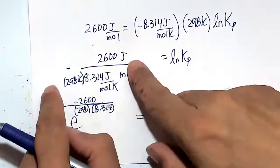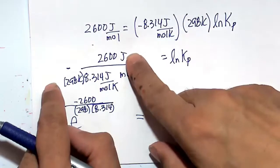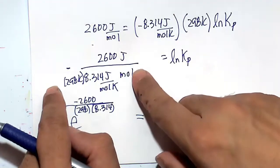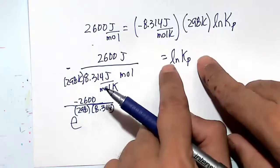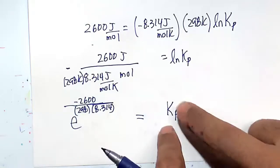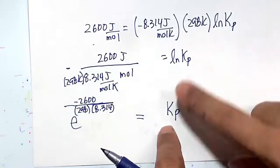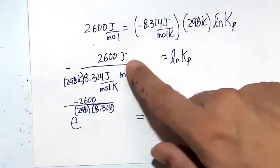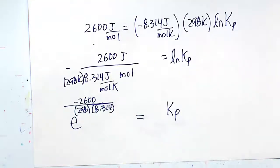So just to reiterate, we took all of this, divided it by the 26 joules per mole, so that gets put in the denominator, isolating natural log of Kp. We take E of both sides to isolate Kp. E to the power of natural log of Kp is just Kp. E to the power of this is something we're going to calculate right now.